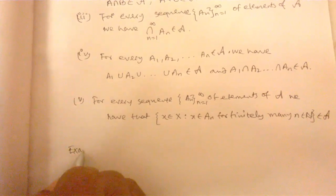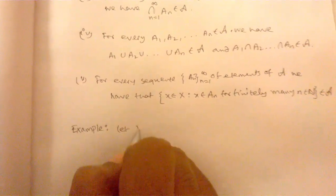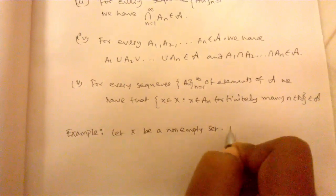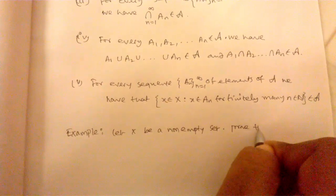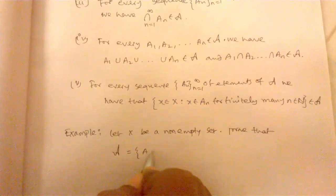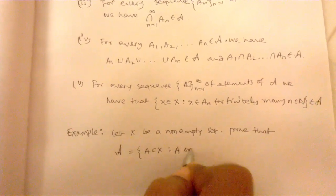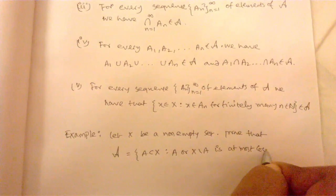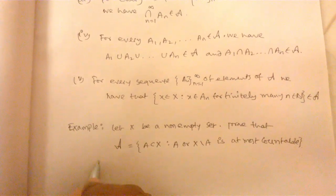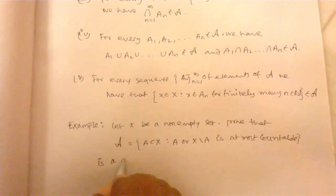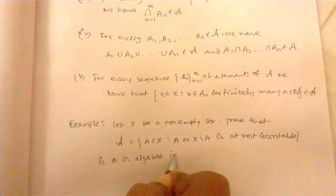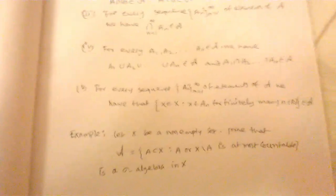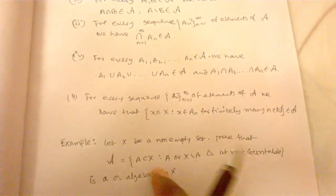Example of sigma algebra. Let X be a non-empty set. Prove that collection A equals {subsets of X such that A or X minus A is at most countable}. The collection A is a sigma algebra in X. We can prove it by the three properties. First one, taking A equals phi, hence phi belongs to the collection A. Second is obvious.